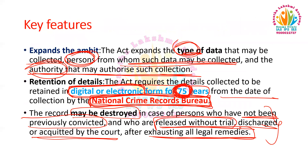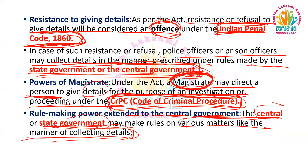To summarize the key features: the Act expands the ambit of data type, persons, and authority; details may be retained for 75 years by the National Crime Records Bureau in digital or electronic form; data may be destroyed under certain conditions; refusal to give details is an offence under the Indian Penal Code; police can still collect details under state or central government rules; the magistrate's powers are expanded to direct any person to give details for investigation under the CrPC; and rule-making power is extended to the central government.